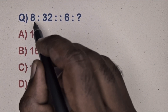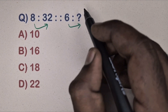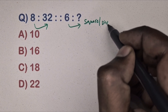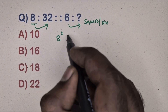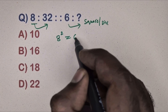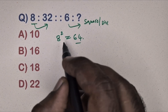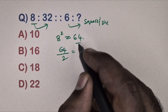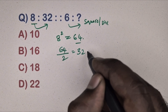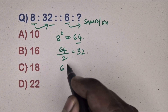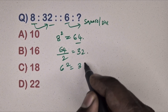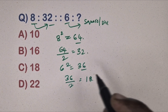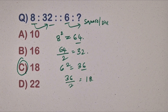Next question: 8 is related to 32, 6 is related to which number? This is the square and halving method. Take 8: 8² = 64, divide by 2 to get 32. Same way, take 6: 6² = 36, divide by 2 to get 18. Option C is the correct answer.